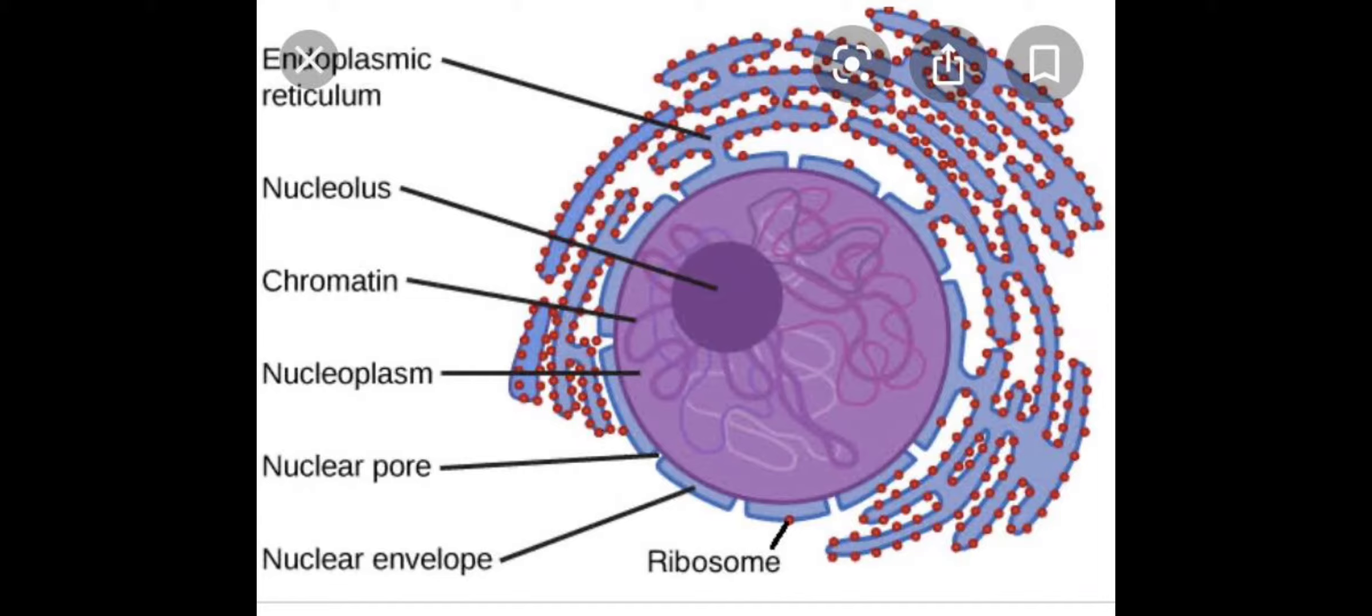Now you will see that this nuclear envelope or nuclear membrane is not continuous. It is innervated by tiny pores which are known as nuclear pores, and these nuclear pores allow the exchange of material between the nucleus and the cytoplasm.